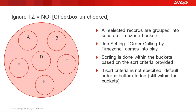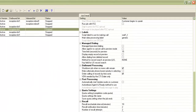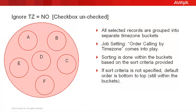Now that the records are grouped in respective timezone buckets, the job setting 'order calling records by timezone' comes into picture. On the editor, you will see this setting on the job with a checkbox. If you check this checkbox, it means you are telling the system to follow the order of the timezones. The system will see which timezone opens up first based on the legally permissible guard times, and it will finish dialing out all the records from this timezone before moving on to the next. While calling, it follows the sort within the bucket. It's possible with this order-by-timezone setting that a record which should have been dialed later gets dialed out earlier just because it was falling in a timezone which opens up earlier than others.